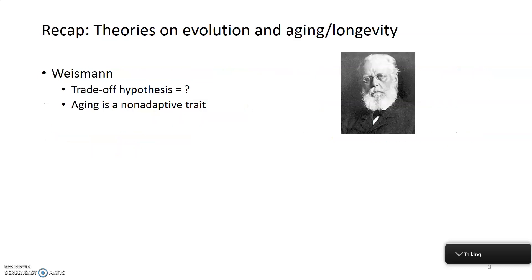Starting with a brief review: take a moment to recall Weissman's contribution to the theory of evolution and aging. He came up with the trade-off hypothesis, and you should be able to identify what that hypothesis states. Weissman also argued that aging is a non-adaptive trait, meaning that natural selection doesn't act on aging.